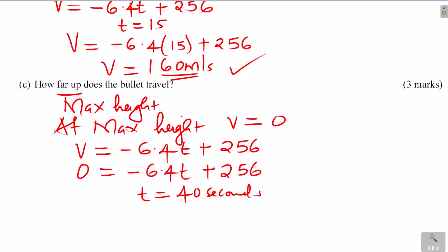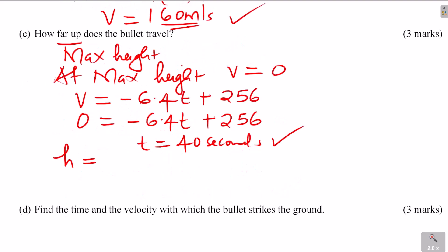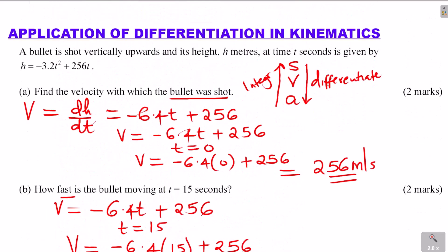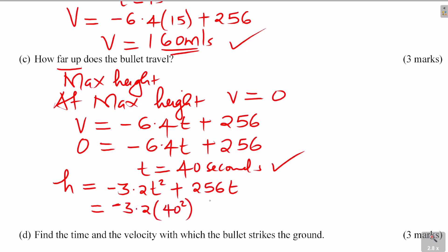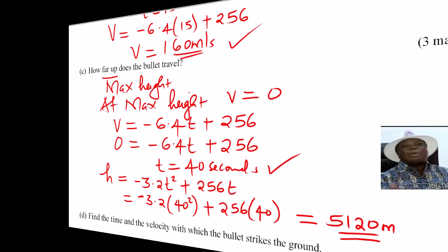Now we need the actual height reached. We use the expression for height and substitute t equals 40 seconds. Height equals negative 3.2 times 40 squared plus 256 times 40. Working this out gives a maximum height of 5120 meters.